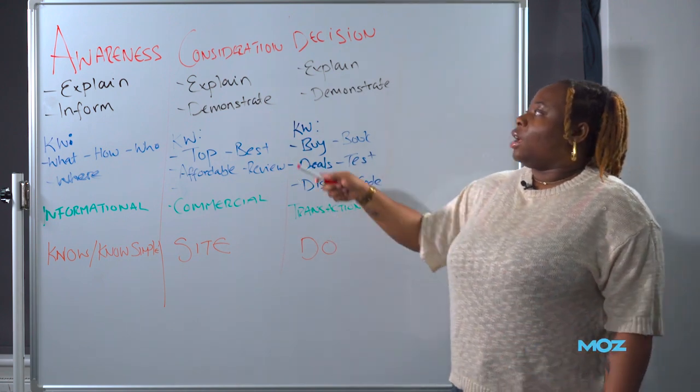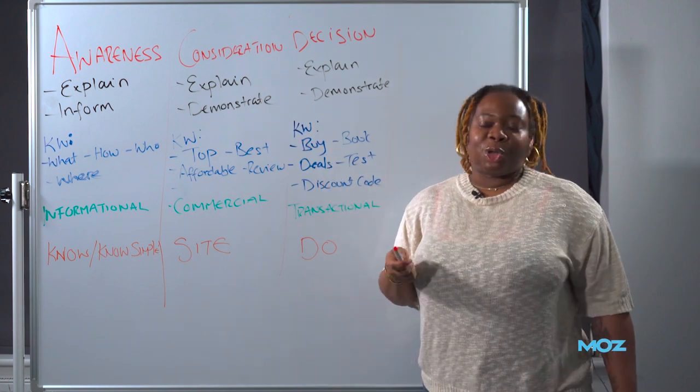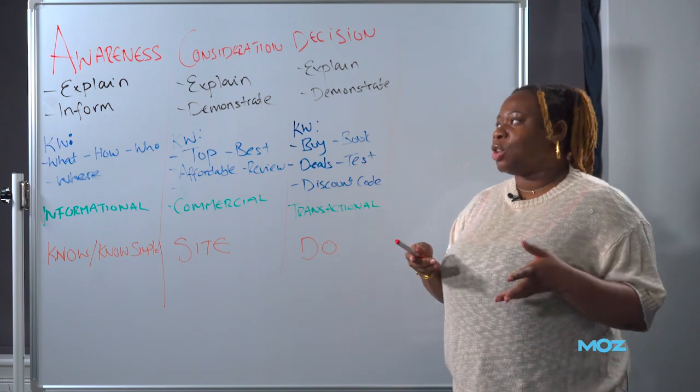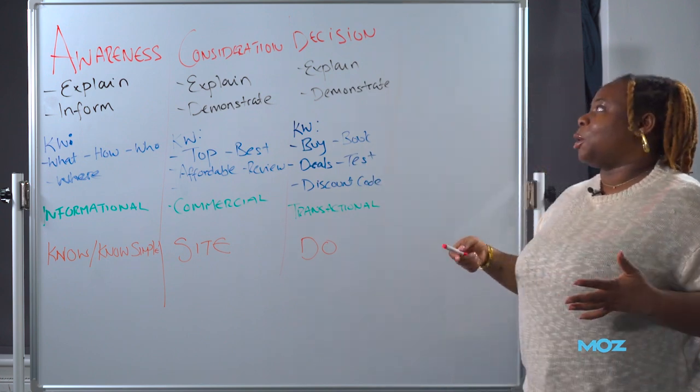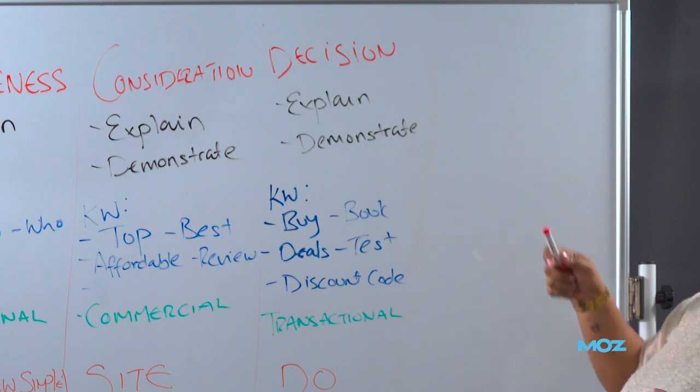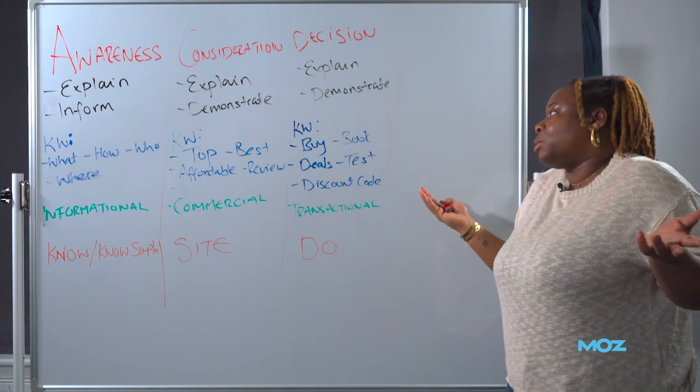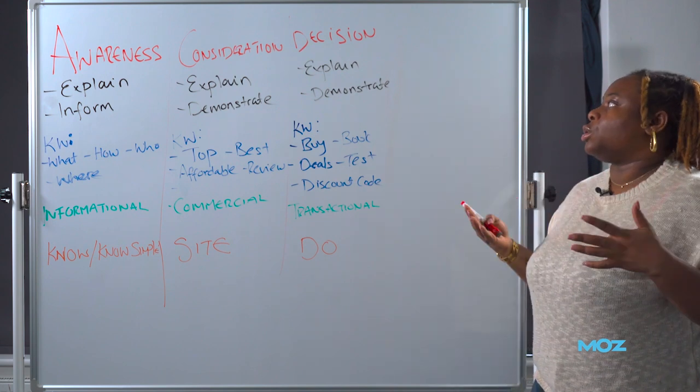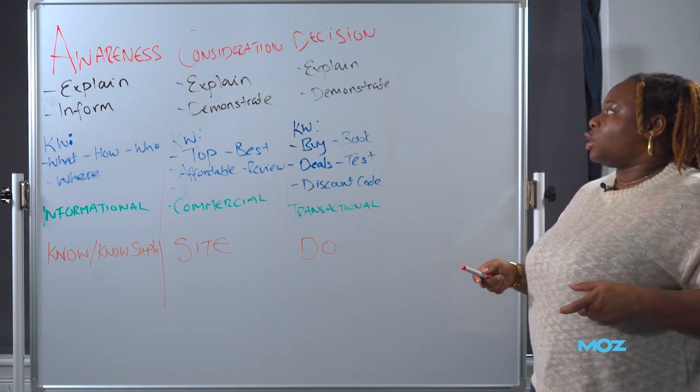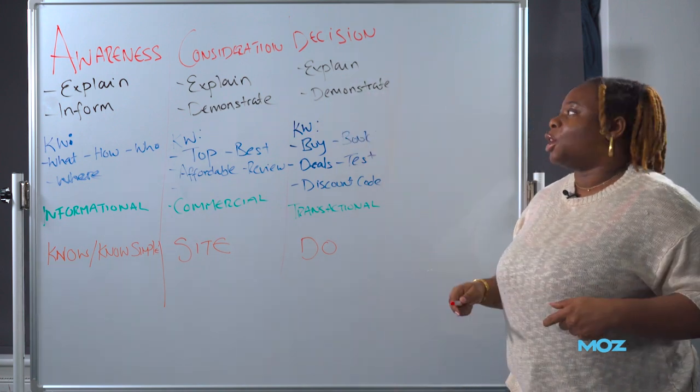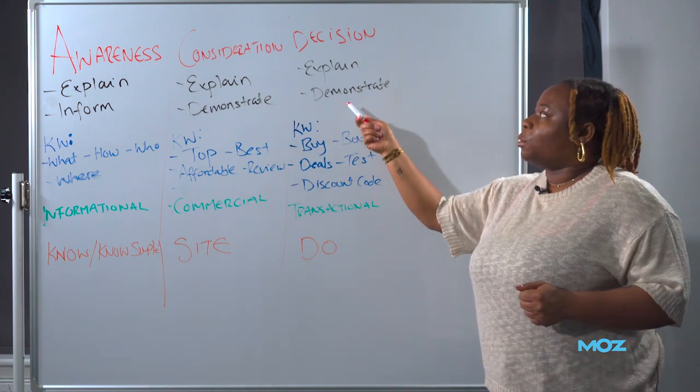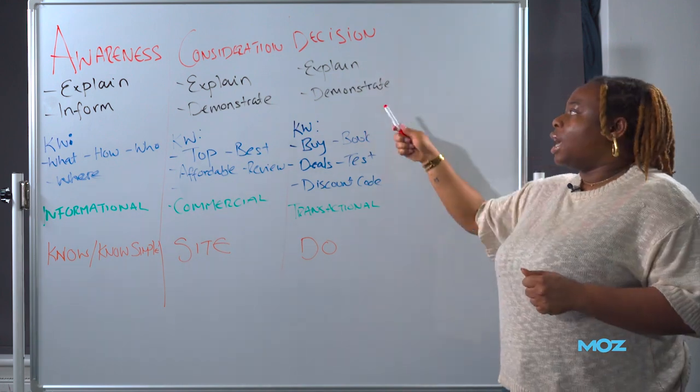So our buyer, they have the options. They're looking at it and they've picked the one best solution. So of course, the next stage is going to be the decision stage. So in the decision stage, they want to find the best price. I know what provider I want. I know where I need to go to get this one solution. So again, you're still going to explain, you're still going to demonstrate, but how can you demonstrate within the decision stage? That's easy. FAQs.